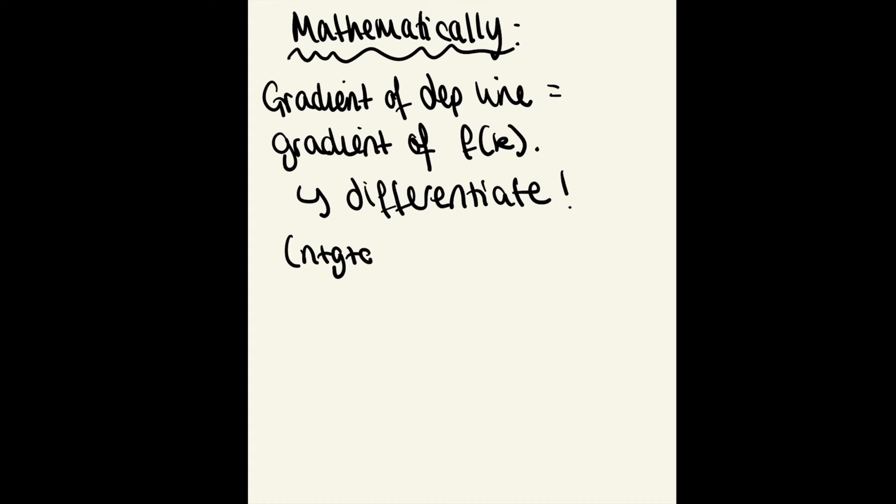Here's an example. Say our depreciation line is n plus g plus delta k. Differentiating with respect to capital, we're left with n plus g plus delta. Let's pretend our production function is k to the half.